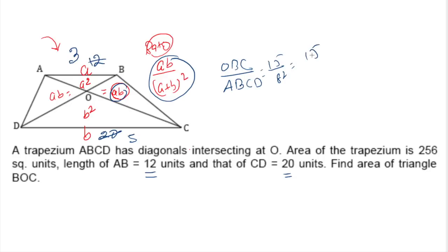So it's 15 out of 64. In the question it is given that the trapezium area is 256. Assume this is x because we have all the ratios. We took the values of ABCD from the question.